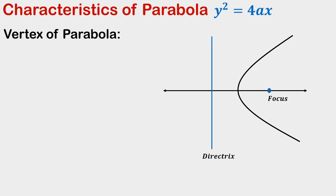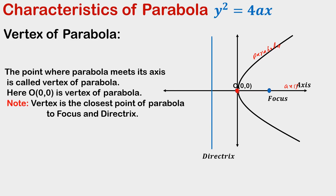For the vertex of a parabola, we take the parabola, its focus, its directrix, its axis, and draw the y-axis. We note that there is a point where the axis of the parabola and the parabola meet each other. The point where the parabola and its axis meet is called the vertex of the parabola, and in this case (0, 0) is the vertex.